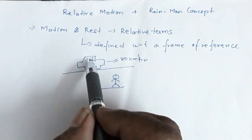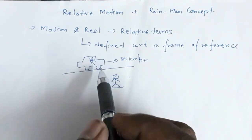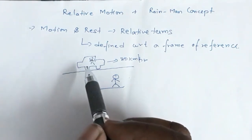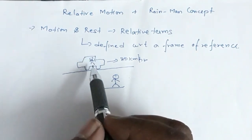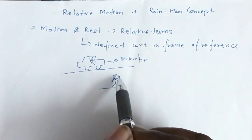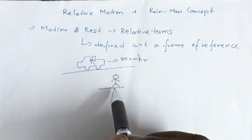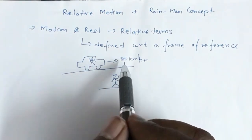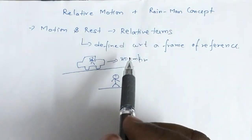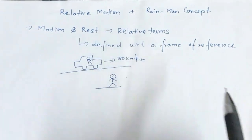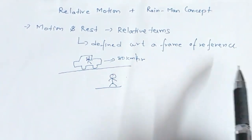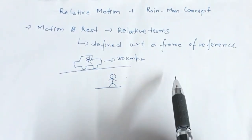So, the person remains the same, but when the frame of reference changes from the car to the person on the ground, the state of the body changes. In the frame of reference of the car, this person is at rest. In the frame of reference of the person on the ground, the person is moving. Hence, motion and rest are relative terms.